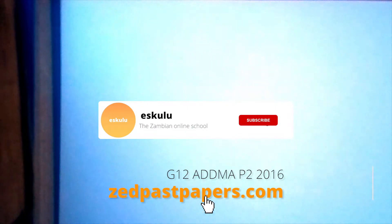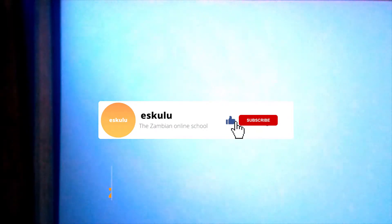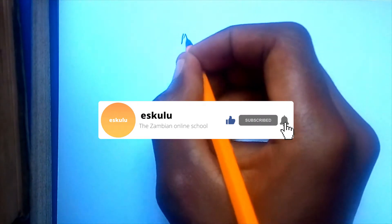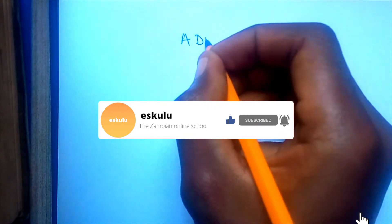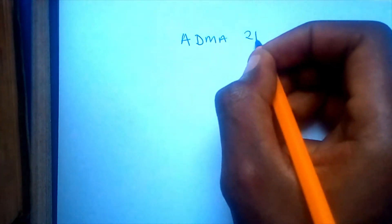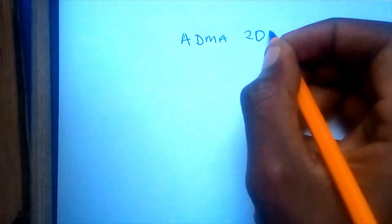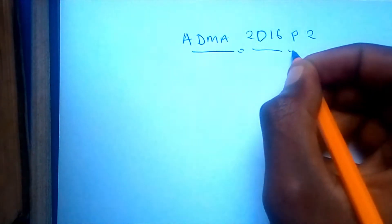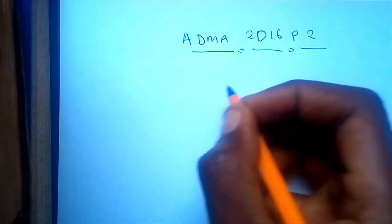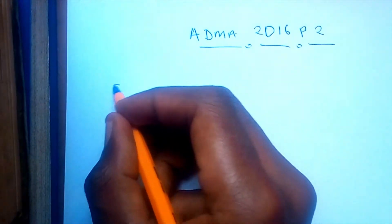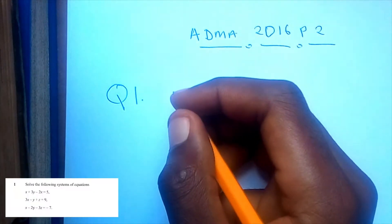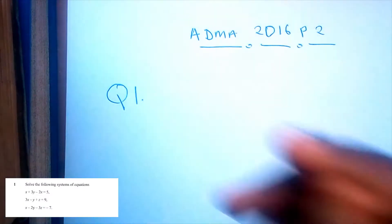In this video we're going to be solving the Additional Mathematics 2016 Paper 2. Question 1 reads: solve the following system of equations.